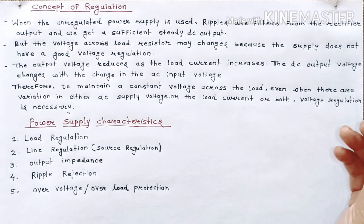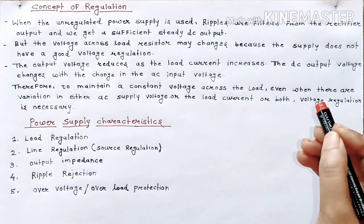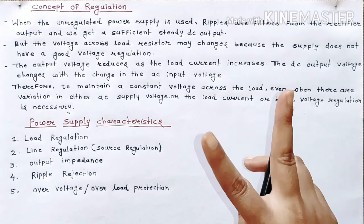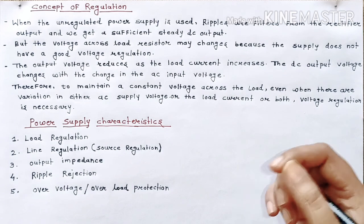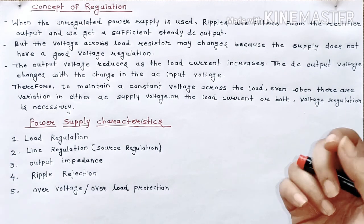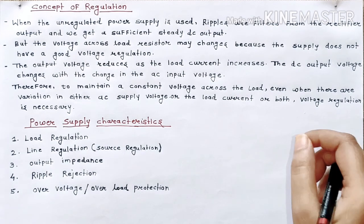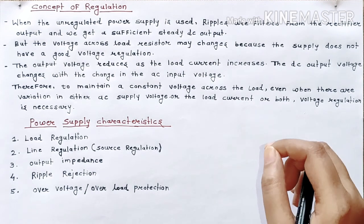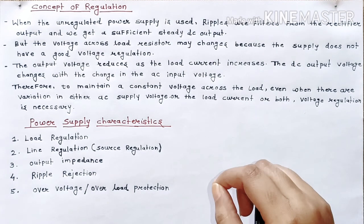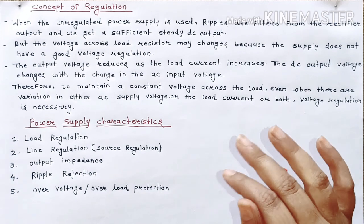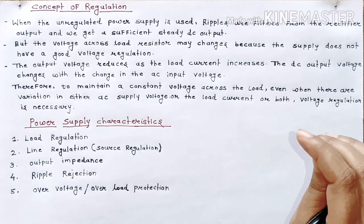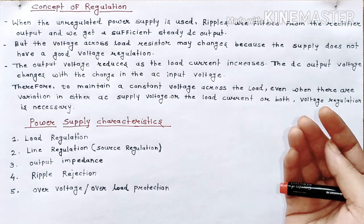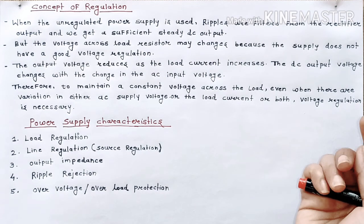Or due to the change in supply voltage, there is a change in the output voltage. These two factors are causing our output voltage to change, which should not happen — that is why we need a voltage regulator. In simple words, I have explained the concept of regulation: why we need regulation.